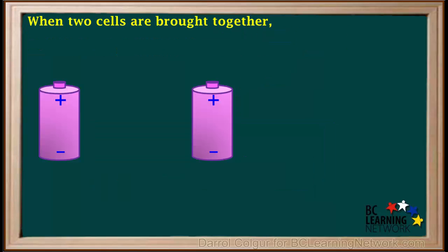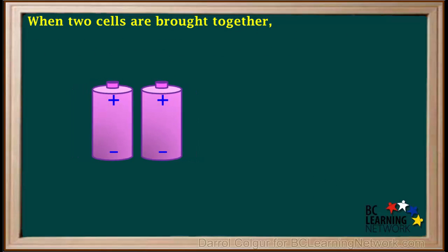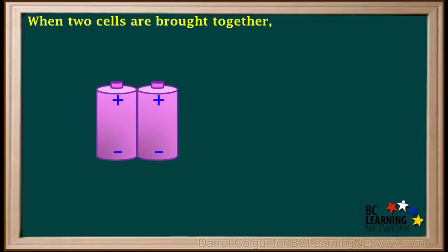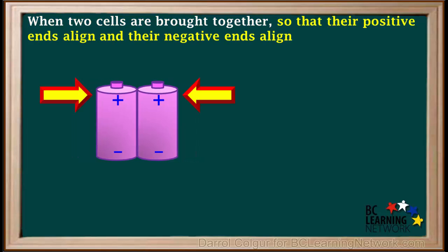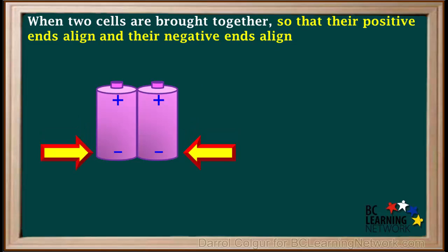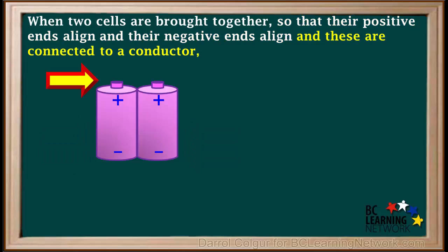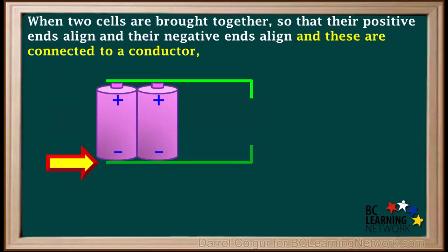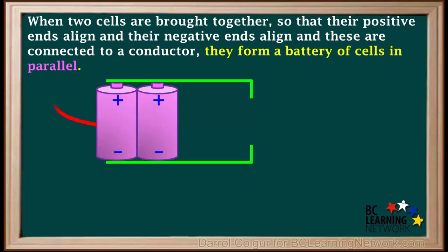Now we'll look at a different arrangement. When two cells are brought together so that their positive ends align and their negative ends align, and the two positive ends are connected by a conductor and the two negative ends are connected by a conductor, they form a battery of two cells in parallel.